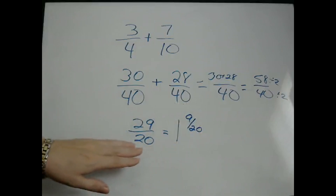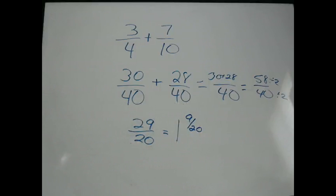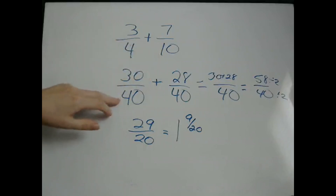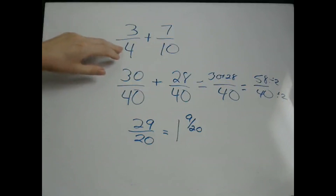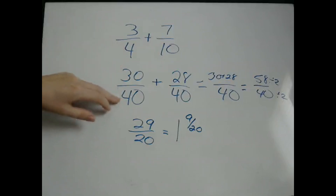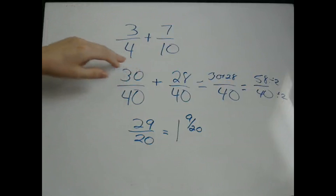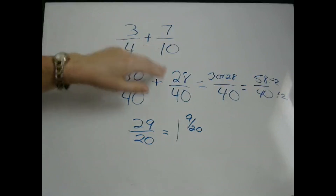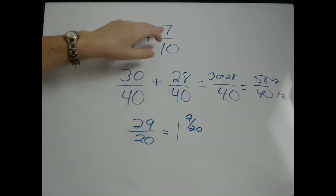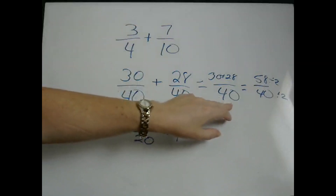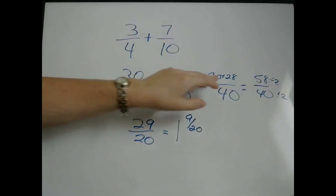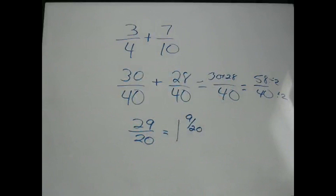So that's your answer — either 29 twentieths as an improper fraction or 1 and 9 twentieths as a mixed number. Again, the key is to find a common denominator. The way you can do that is to multiply your denominators together, then transform each fraction. What did we do with 4 to get 40? Multiplied by 10, so multiply 3 by 10 to get 30. How did we get 10 to 40? Multiplied by 4, so 4 times 7 is 28. Then keep the denominator and add straight across. Make sure your answer is in lowest terms and a mixed number if appropriate.